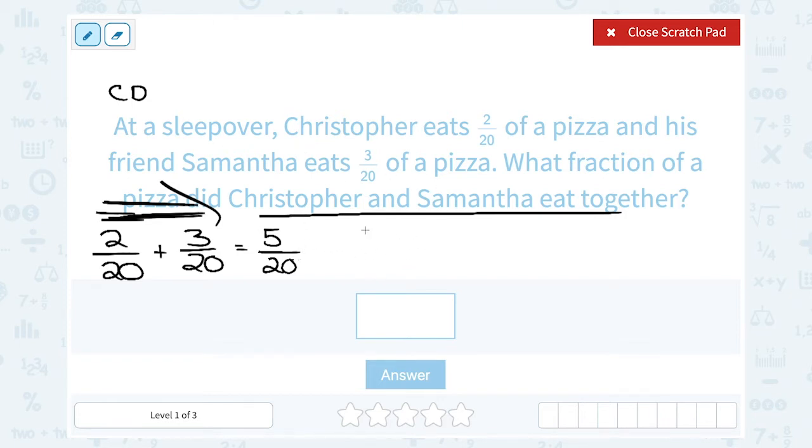Now in this case, we can simplify our answer because five goes into both 5 and 20. So we could write 5 as 5 times 1, and we could write 20 as 5 times 4. And if you do it that way, then you can see that you could cancel the common factor of 5, and saying they ate 5/20 of a pizza is the exact same thing as saying they ate 1/4 or 1 quarter of a pizza.